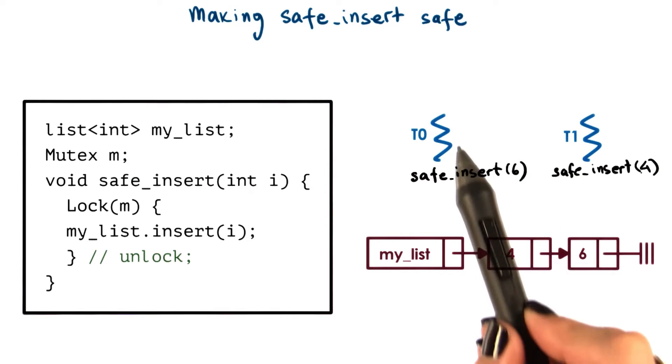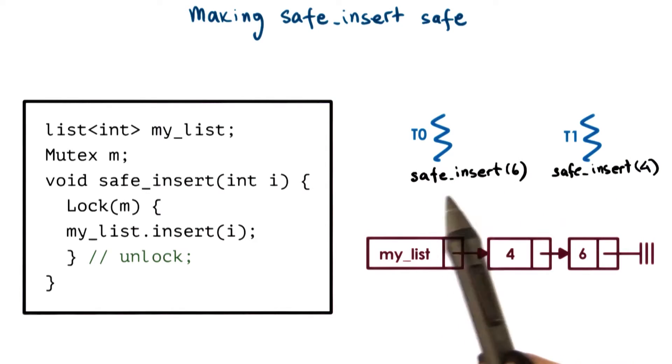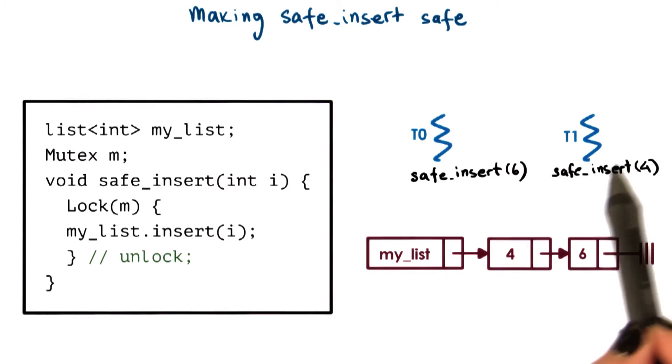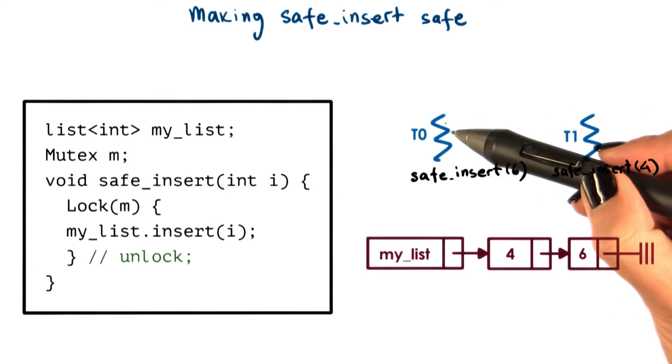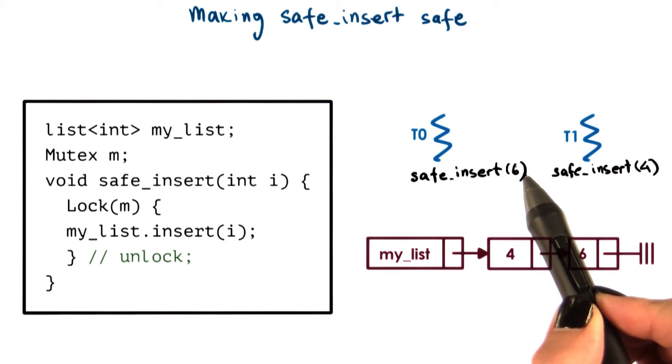Just like in the threads creation code, we have threads t0 and t1, and they both want to perform the safe insert operation. The parent thread t0 wants to perform safe insert with an element 6, and the child thread wants to perform safe insert with a value 4. Let's assume that once the parent created the child t1, it continued executing and was the first one to reach safe insert with value 6.